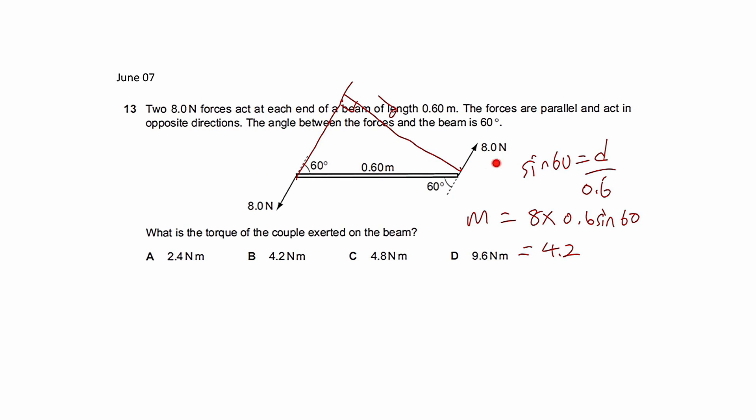So since 8 cos 60 for both forces will pass through each other, they will not contribute any moments. But your 8 sin 60 and 8 sin 60 are in opposite directions, and their perpendicular distance will be 0.6. So you can also do that, but your working will be 8 sin 60 times 0.6. You get the same answer, alright?